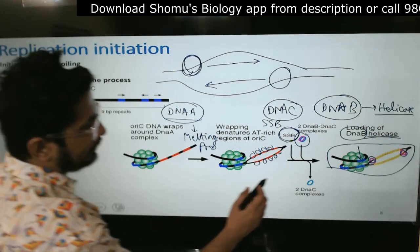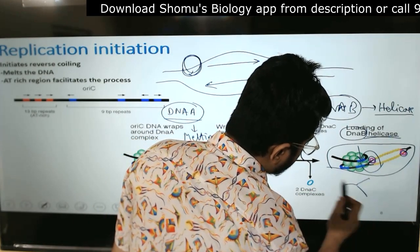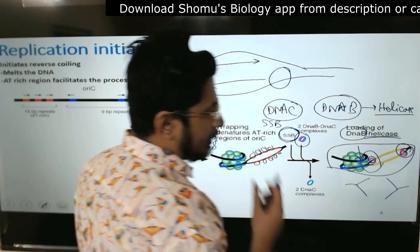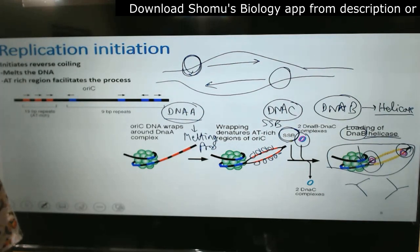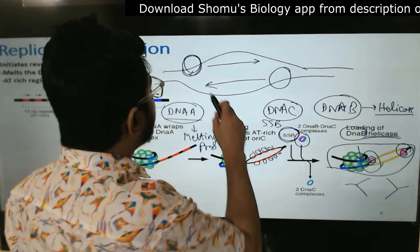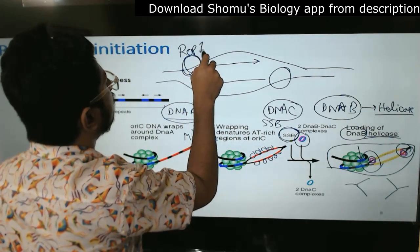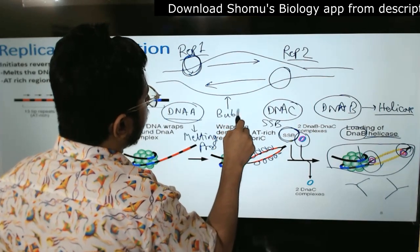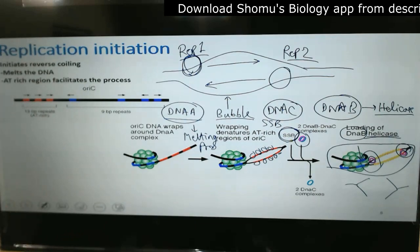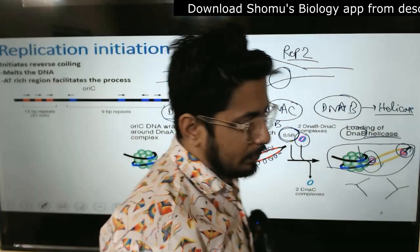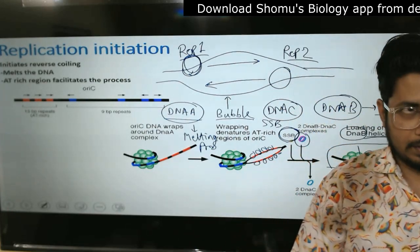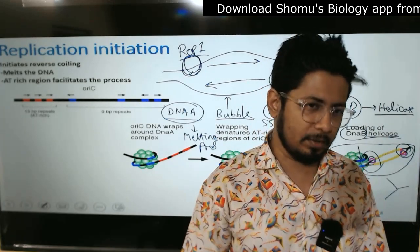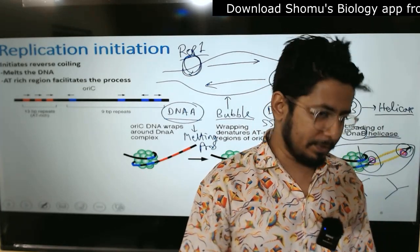Once helicase is loaded and separates the strands, the structure looks like this: one area forms a Y-shape and another area forms another Y-shape. This Y-shaped structure formed during the initiation of DNA replication is known as a replication fork. Two such forks together — replication fork 1 and replication fork 2 — are known as a replication bubble. So whenever a question mentions a replication bubble, remember it consists of two replication forks, one on each side, typically described by their 5'-to-3' orientation.